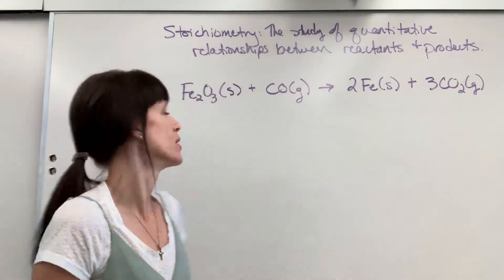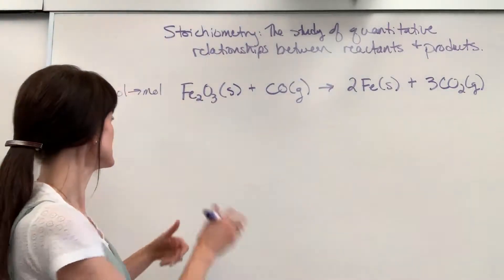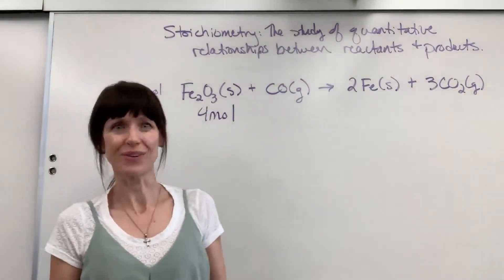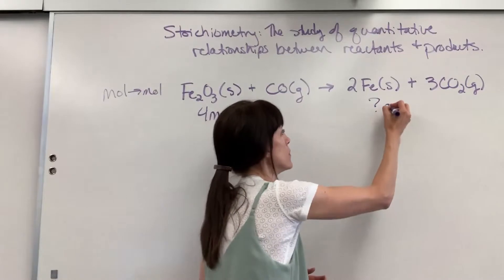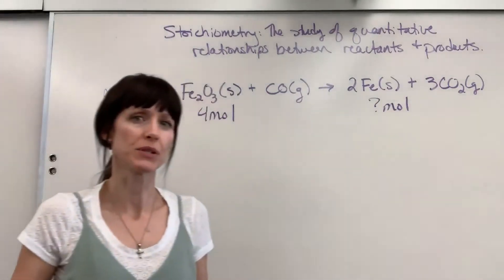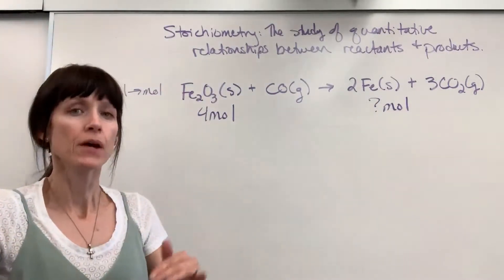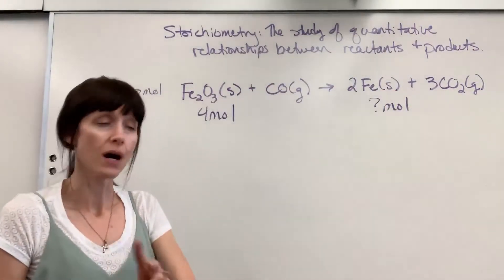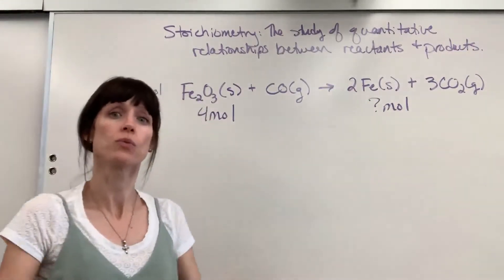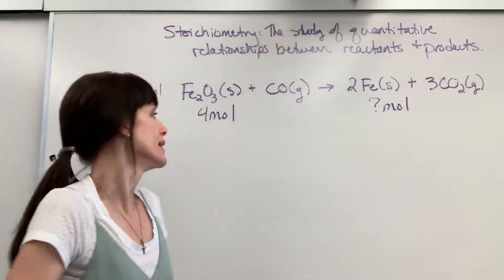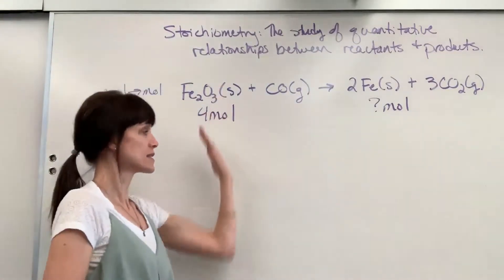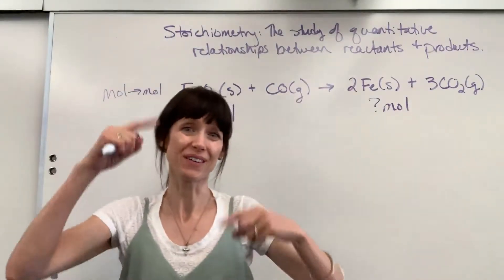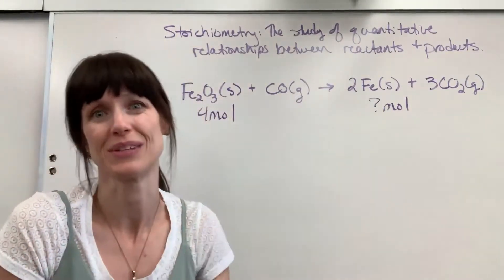The easiest case: we start with moles and we end with moles. Let's say we have four moles of iron three oxide and we want to know how many moles of iron will be produced. You always begin with a balanced chemical equation, then write down underneath that equation what you're given and what you want — it's as if we're walking a path from where we begin to where we want to end.